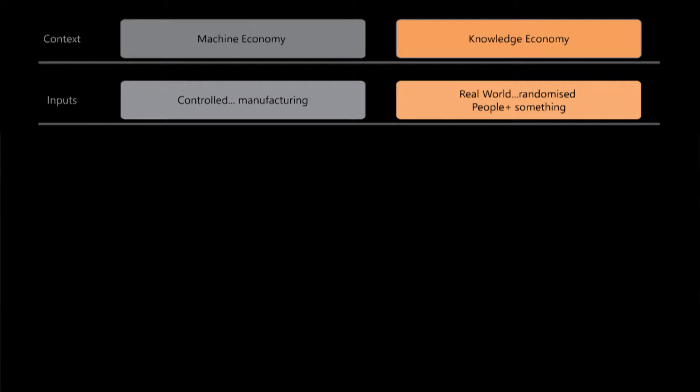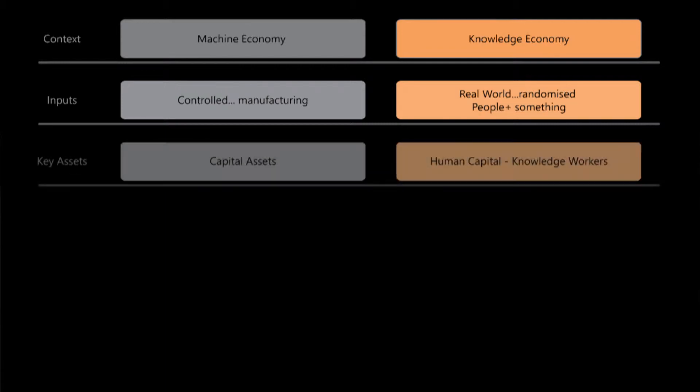Within the machine economy the key asset was your capital, your property, your machines, your material and the final product. But now we're dealing with human capital. It's people's skills, experience and knowledge that drive this economy.